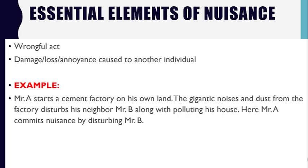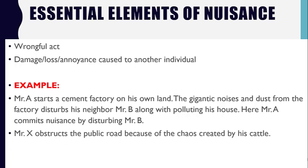One more example: Mr. X obstructs the public road because of the chaos created by his cattle. Mr. X gathered all his cattle in the middle of a public road, obstructing transportation. Because of this, people on the public road are facing problems. This is nuisance — his wrongful act of bringing so many cattle onto a public road, combined with the annoyance and damage caused to the general public, makes it nuisance.